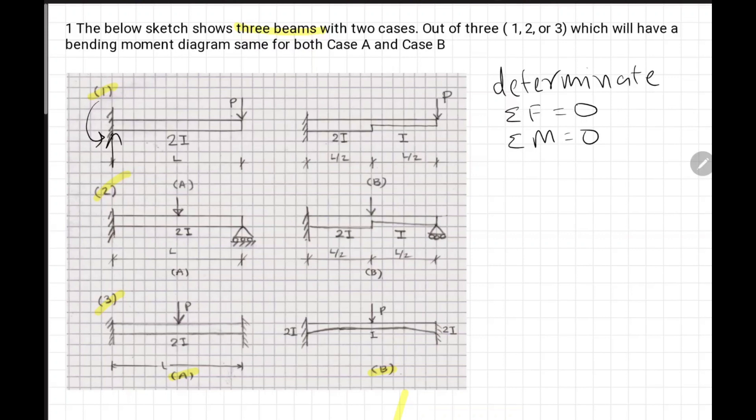If we have a structure which is indeterminate, it requires compatibility equations. When our structure is determinate, the bending moment diagram will not depend on stiffness of the beam. The correct answer for this question - out of three cases which will have same bending moment diagram - the answer would be first, the determinate structure. Bending moment diagram and shear force diagram will not depend on its stiffness.